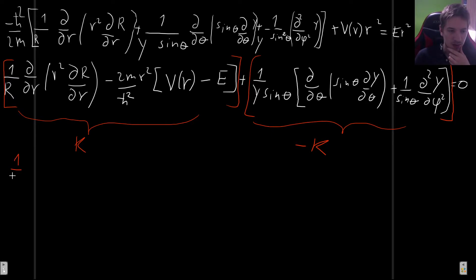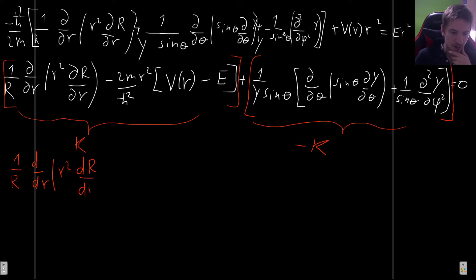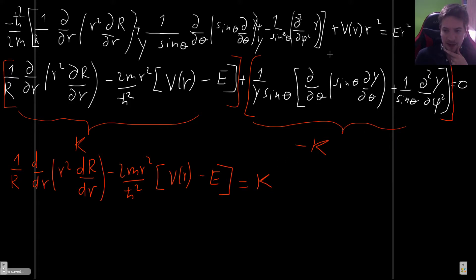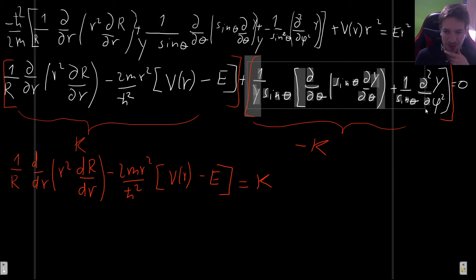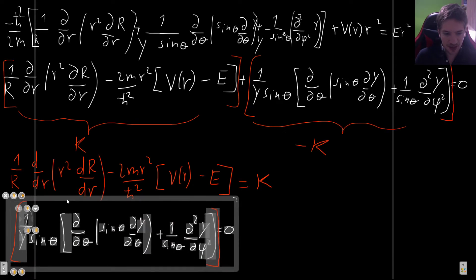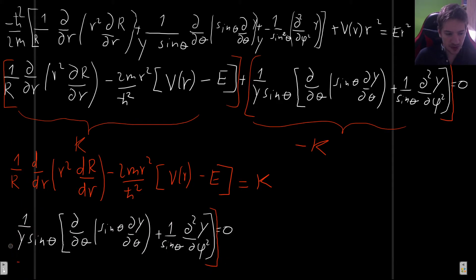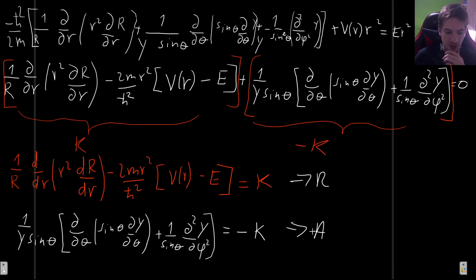We now write the two equations separately. The radial equation is: (1/R)(d/dr)(r² dR/dr) − (2mr²/ℏ²)(V(r) − E) = k. The angular equation has the angular expression equal to −k. The angular equation is actually the first one we will attempt to solve, and I will begin that in the next video.